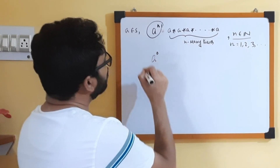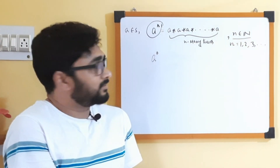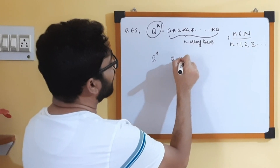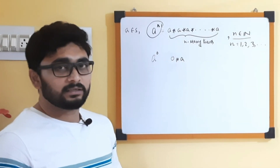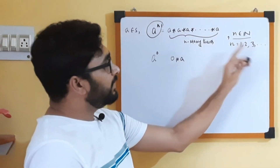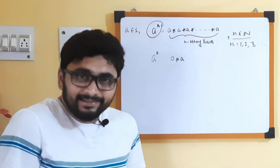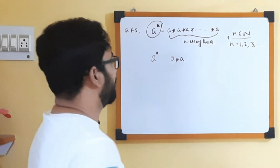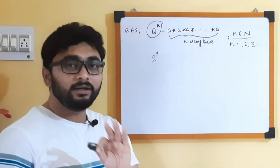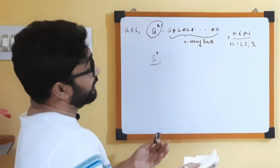If we try to apply the same definition when n is 0, what will we get? If I ask you what will be a to the power 0, what is the meaning — how do we define that? You cannot say that a to the power 0 is 0 operated with a; that is meaningless. So the question becomes: for n being a positive integer this is okay, but if n is 0, then how will we interpret what is a to the power 0?